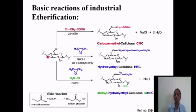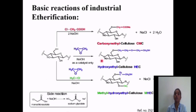These are the basic reactions of industrial etherification. Cellulose undergoes three reaction steps: first it reacts with the carboxylic acid group to give carboxymethyl cellulose (CMC), with by-products NaCl and H2O. Second, it reacts with the ethyl ether group to give carboxyethyl cellulose. Third, it reacts with methyl chloride to give methyl hydroxyethyl cellulose (MHEC), with by-products NaCl and H2O.